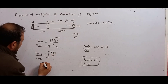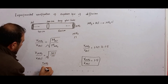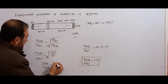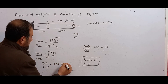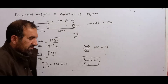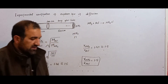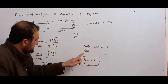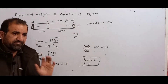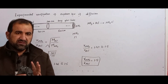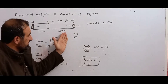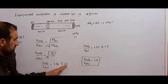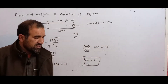R(NH3) / R(HCl) = sqrt(36.5 / 17). Taking the square root gives 1.46. This theoretical value of 1.46 is approximately equal to the experimental value of 1.5. Both values are approximately the same, so Graham's Law of Diffusion is verified.